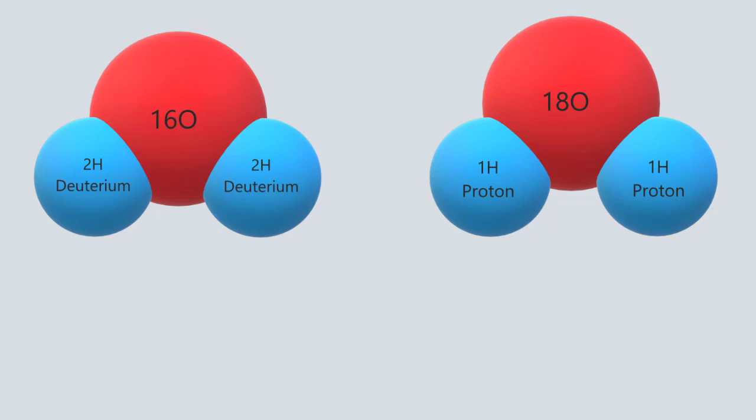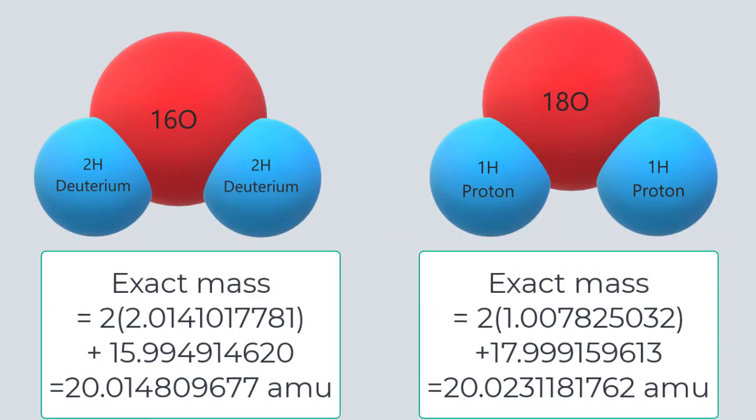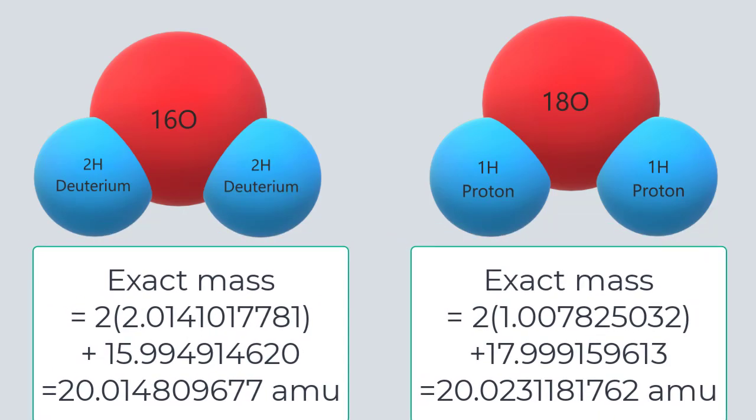To calculate the exact mass of an isotopologue, we simply add up the exact masses of the specific isotopes in the molecule. In our example of heavy water, the water with two deuterium atoms has an exact mass of 20.014809677 atomic mass units, and the water with an oxygen-18 atom has an exact mass of 20.0231181762 atomic mass units. On a high-resolution mass spectrum, you could identify which isotopologue is present.